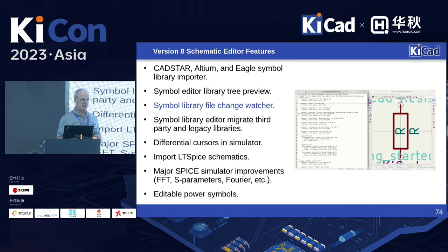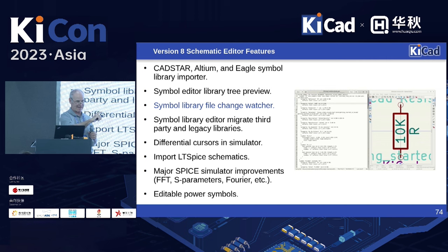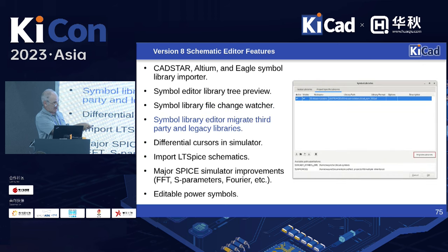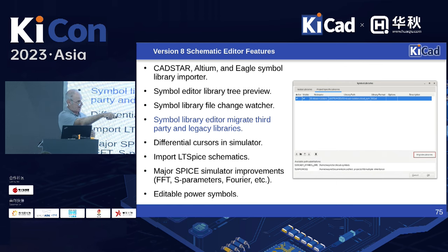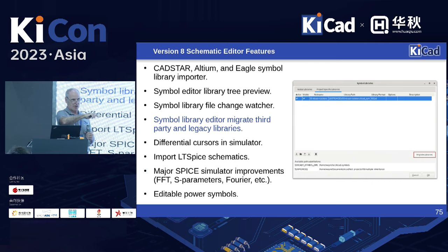There's a new symbol library file change watcher — if you have two instances of KiCad open and one modifies a library, it now detects the change and refreshes your library on the fly to prevent accidental overwrites. There's also a batch conversion tool: if you have third-party Altium or Eagle libraries, you click one button and it exports and converts them all into KiCad libraries so you can modify them like any normal KiCad library.